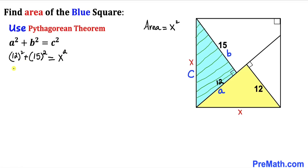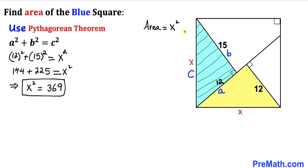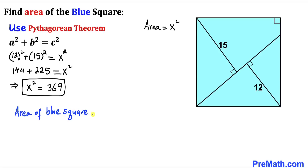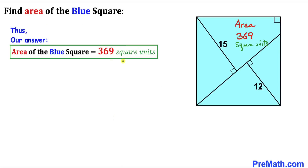Now let's simplify: 12 squared is 144, and 15 squared is 225, so 144 plus 225 equals x squared. Therefore x squared turns out to be 369 square units. Since the area of this square is x squared, we have already figured out our answer. The area of this blue shaded square is equal to 369 square units.